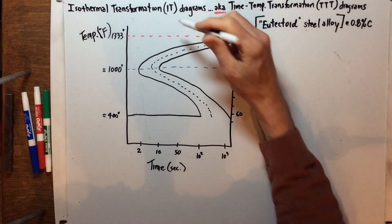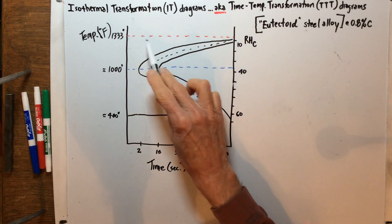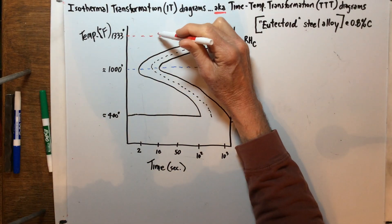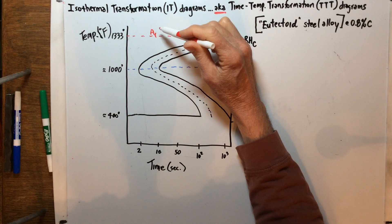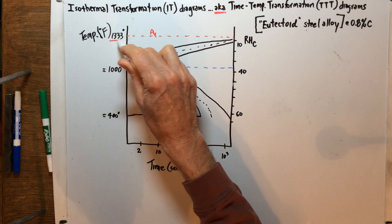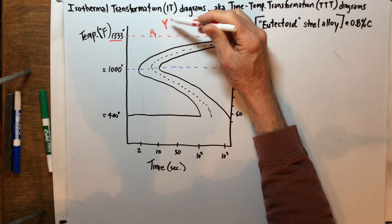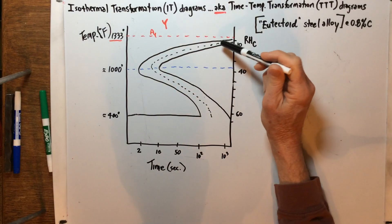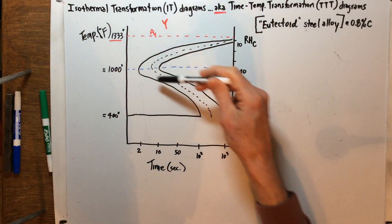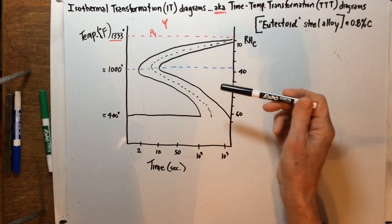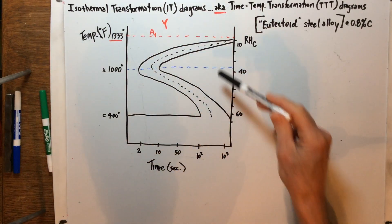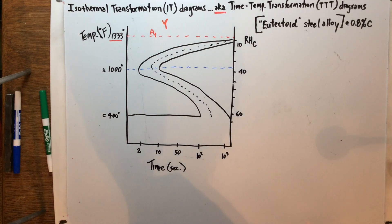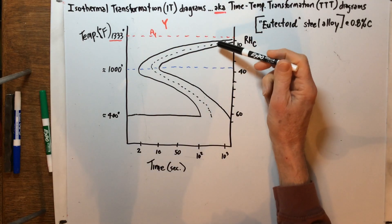The first thing to label is this dotted red line here — this represents the A1 line, the lower transformation line, because it's at 1333 degrees. That means we have all austenite above that line. The diagram itself is this S-shape — sometimes this is actually called the S-curve.